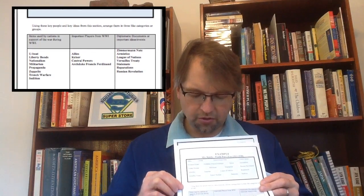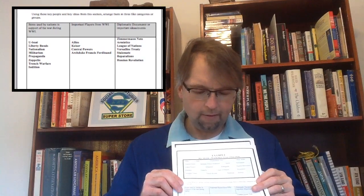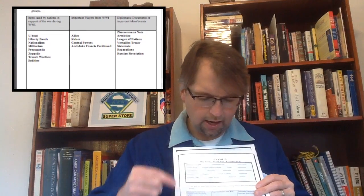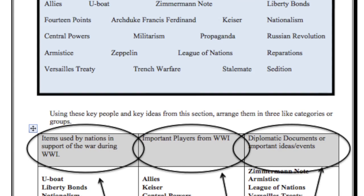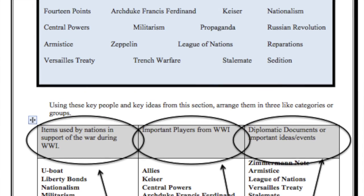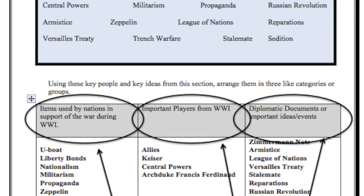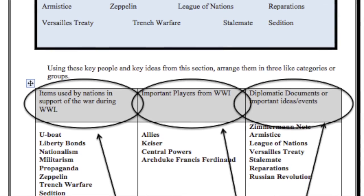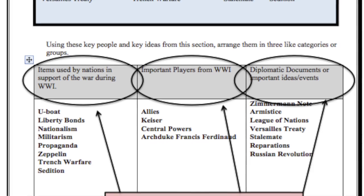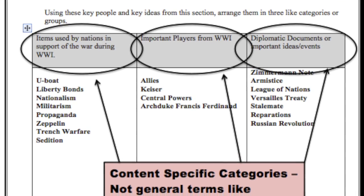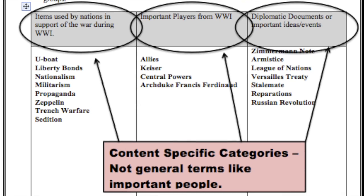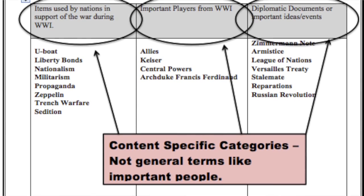Now, sometimes students just want to put 'important people.' But as you can see here in that second category, I have 'important players from World War I.' Or look at this category: 'items used by nations in support of the war during World War I.' Those are very specific categories. Look what they put underneath there — U-Boats, Liberty Bonds, Nationalism, Militarism, and so on. Kids really have to think critically when they place these key concepts or key terms into these specific categories.